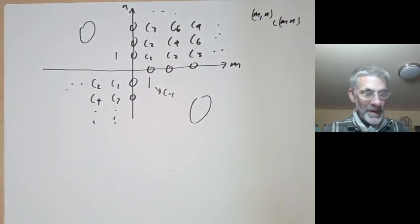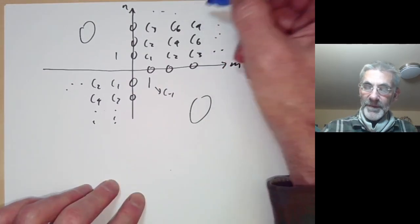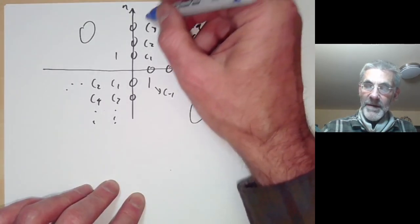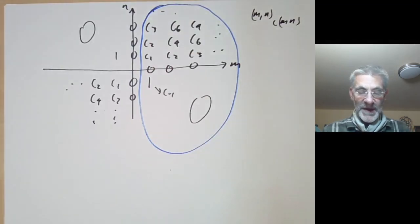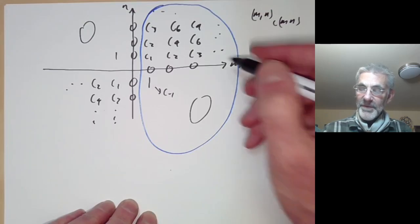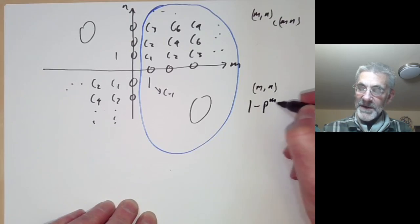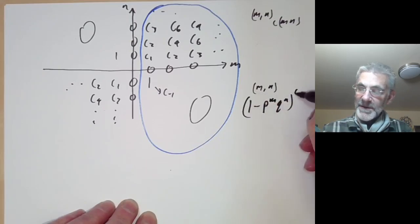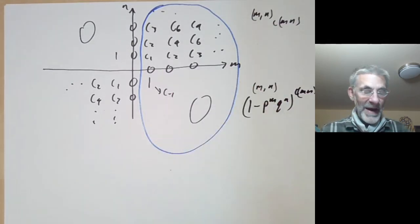What we're taking a product over is everything to the right of the vertical axis. For each point (m, n) we take a factor of (1 - p^m q^n)^{c(mn)}, where p^m and q^n are indexing m and n in some sense.